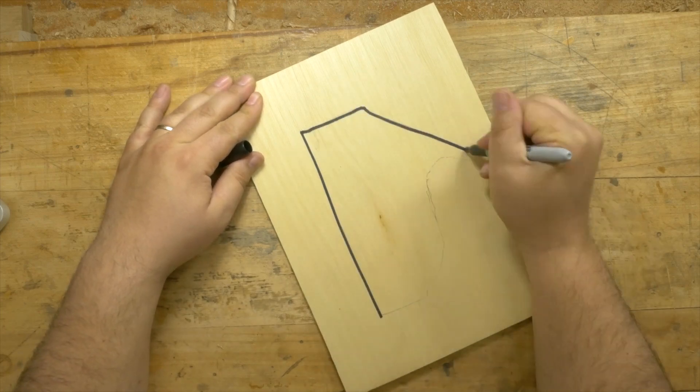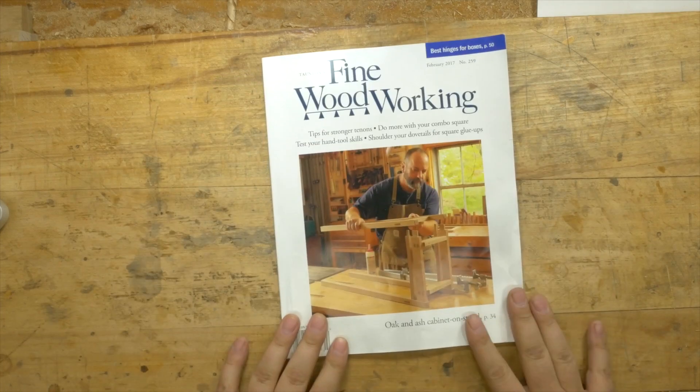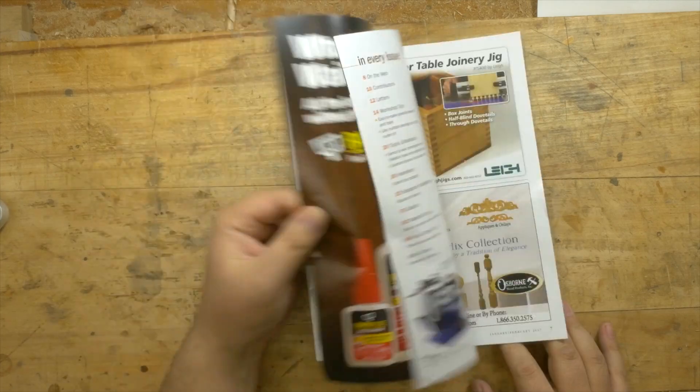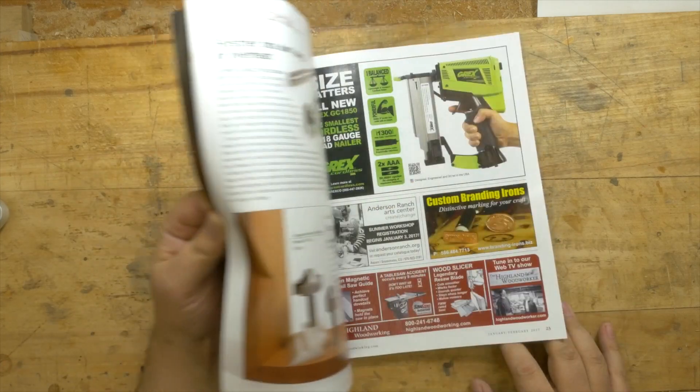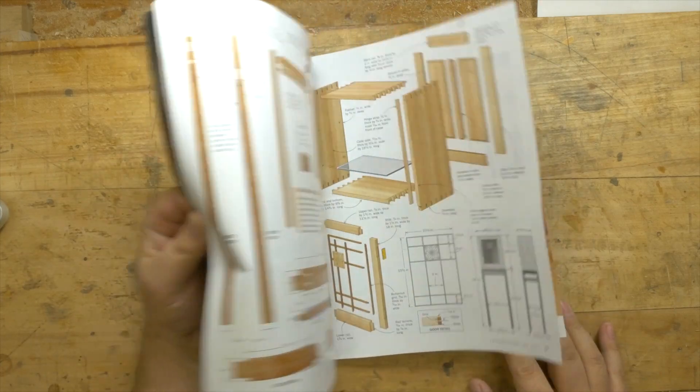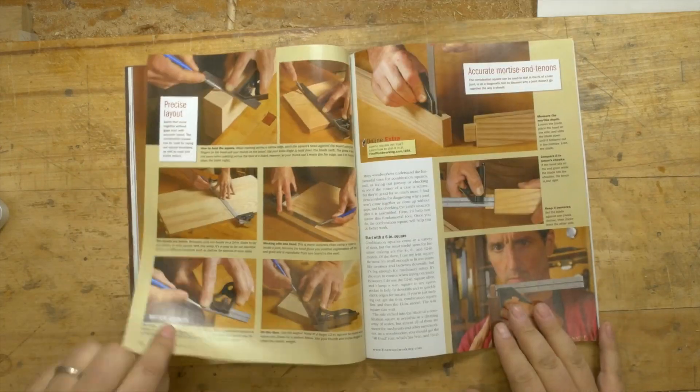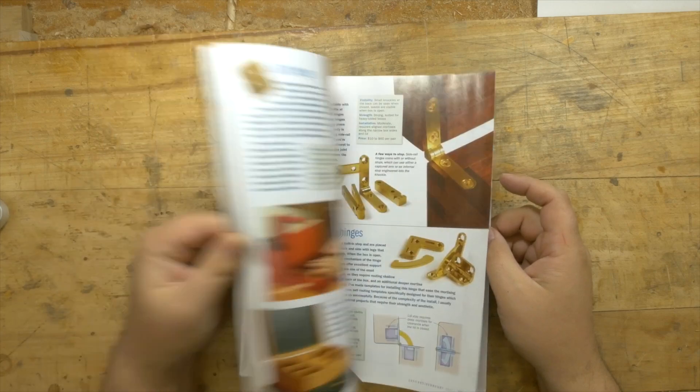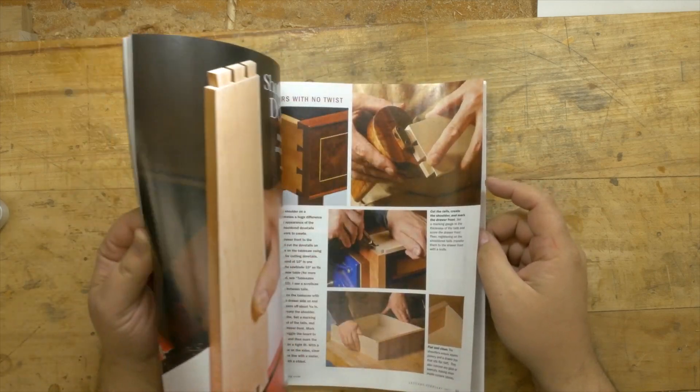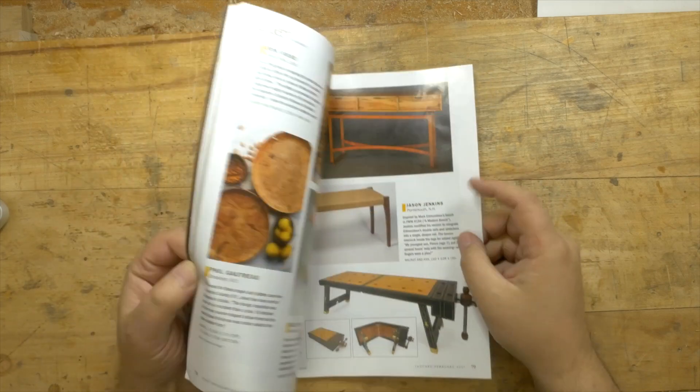You can find a lot more information about using a combo square in a great article written by Tim Rousseau in the January-February 2017 issue of Fine Woodworking magazine. It's a great issue with tons of information. Go pick up a copy today or read it online at finewoodworking.com. We think you're really going to enjoy it.